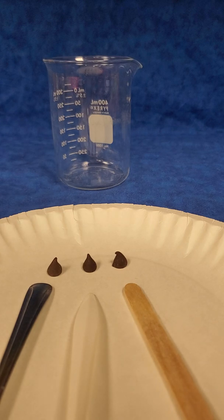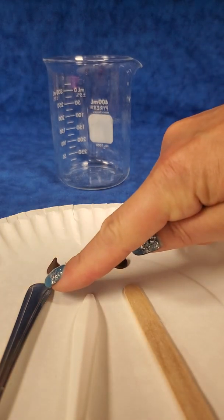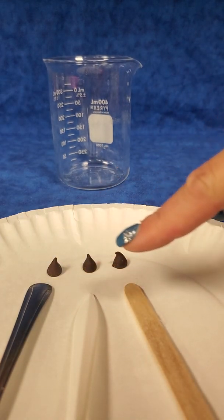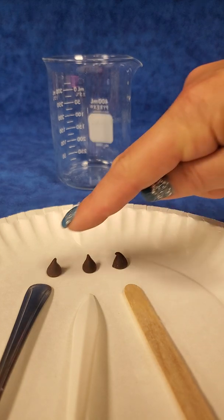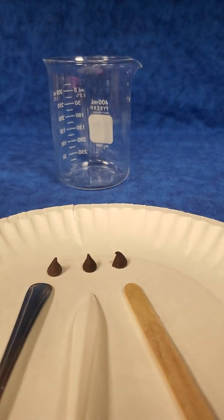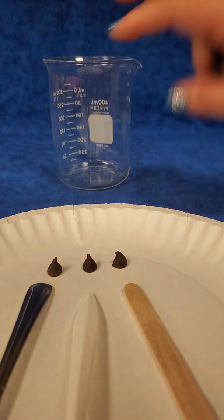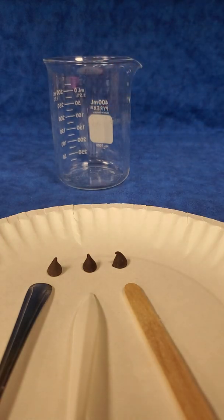To see this for yourself at home you will need a metal spoon, a plastic spoon, a wooden spoon or a popsicle stick, three chocolate chips, a container to hold water, and boiling water.